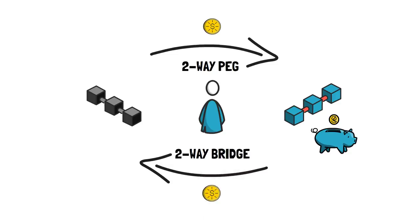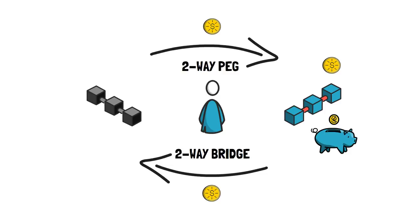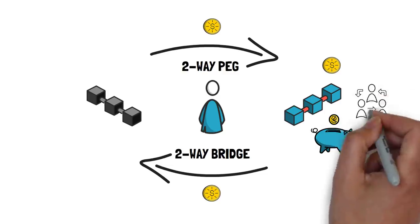Things to note is that once the user tokens are on the sidechain, they are completely reliant on the consensus mechanism of the sidechain.